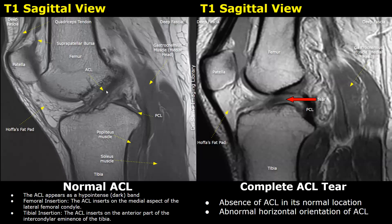We will compare the normal MRI image of the ACL with ACL tears. These are T1-weighted images in sagittal plane. This is the knee — this bone is the femur, and the bone over here is the tibia. This bone is the patella. We can also see the Hoffa's fat pad appearing hyperintense in T1 images.